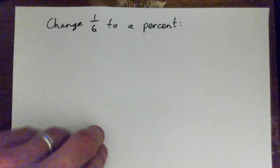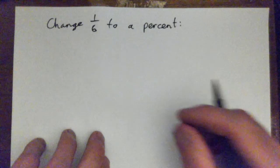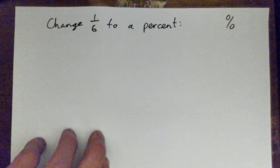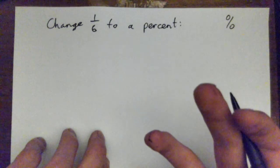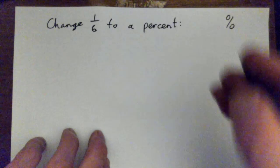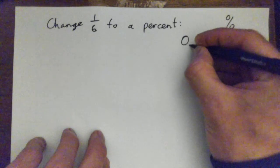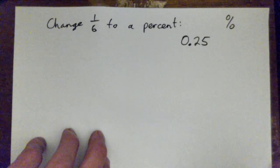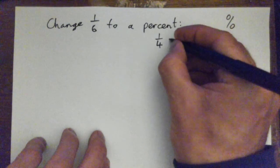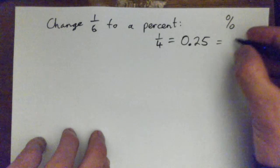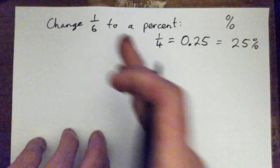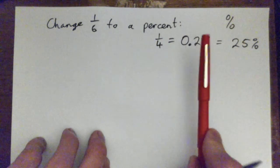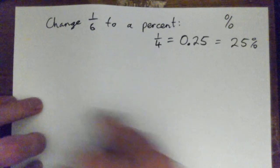We're going to change one-sixth to a percent. The percent is something with that percent sign. The problem is we've got to first turn it into a decimal and then turn it into a percent. Like, you might know that 0.25 — that's like 25 cents or a quarter. That's 0.25 or 25 percent. So we've got to go fraction, then decimal, and then we can get the percent. So change one-sixth to a percent.